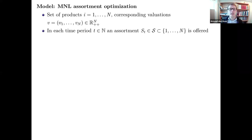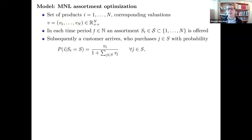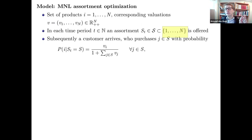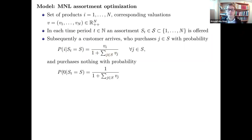Let's be more formal. The valuations are v₁ through vN. We have a dynamic setting where the seller offers assortment S_t at each time period from a feasible set. One consumer arrives per period. If I offer assortment S, the probability of choosing product i is vᵢ divided by the sum of the vⱼ's in S plus one — the normalized attractiveness of the no-purchase option.